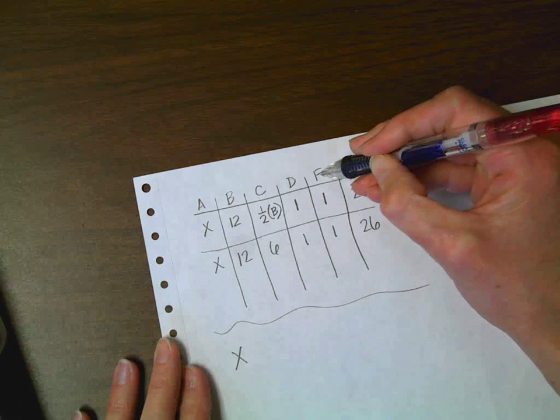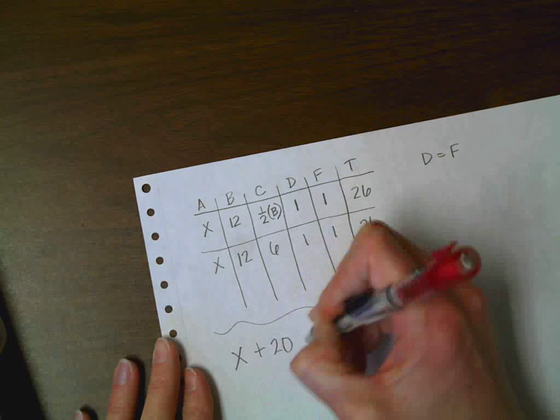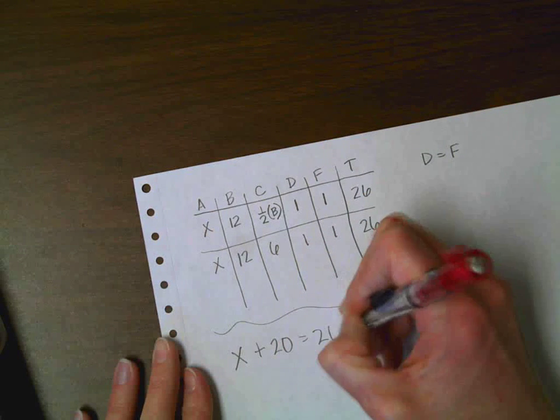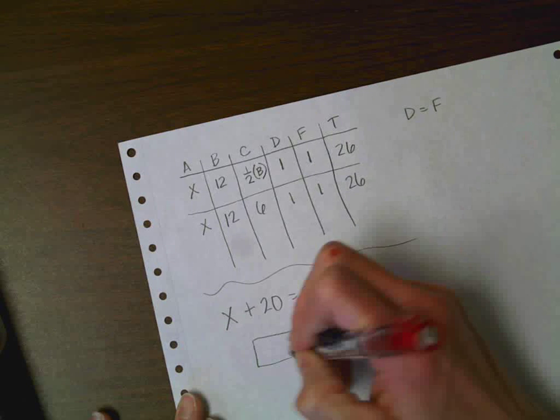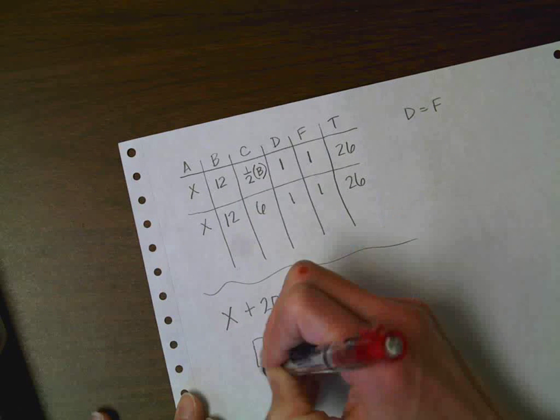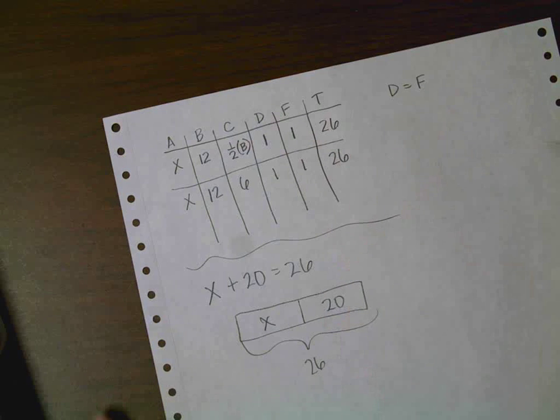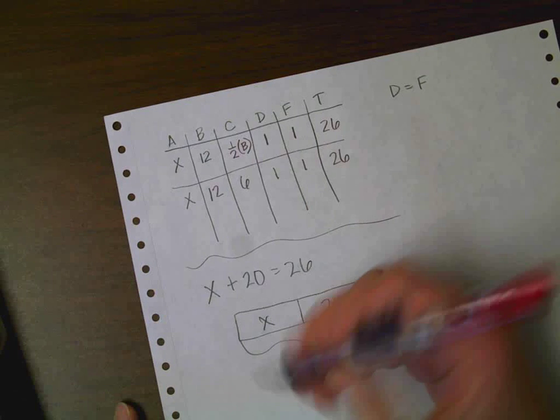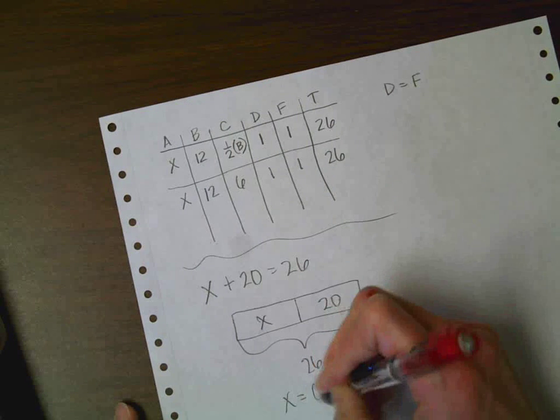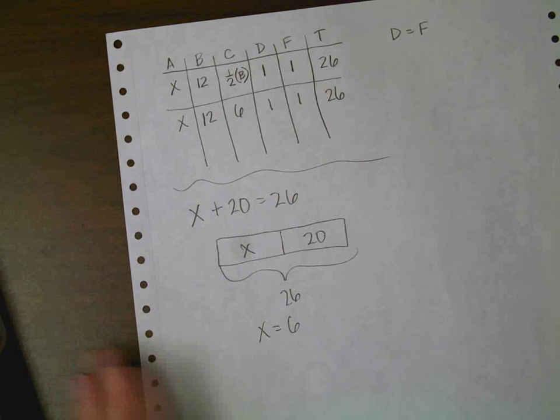Now I have X + 20 = 26. And now very easily I can draw my tape right here. I need two sections. One has an X, one has a 20. All of them together equals 26. So very easily I know that 6 + 20 gives me 26. So I have now figured out that 6 students got A's.